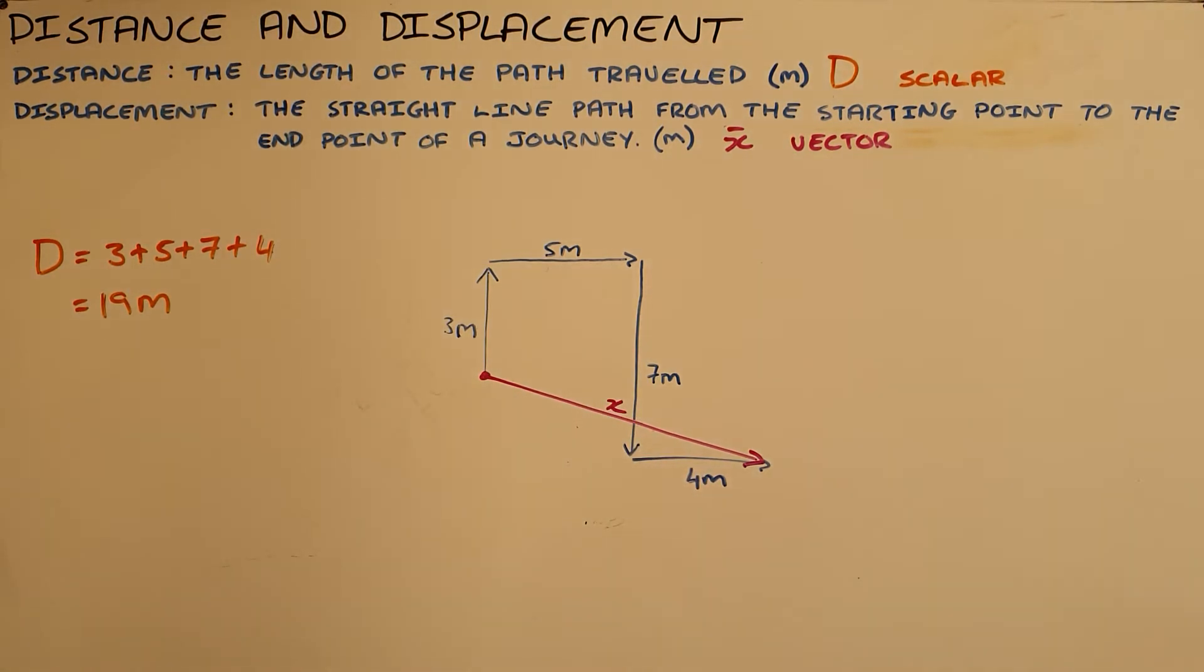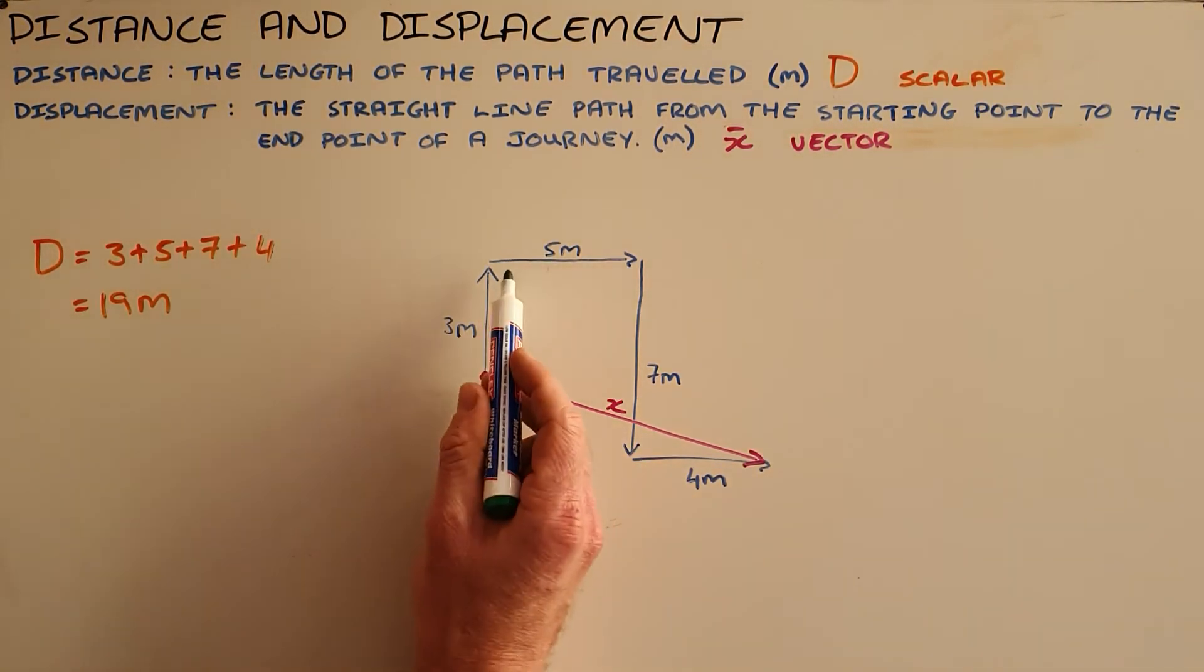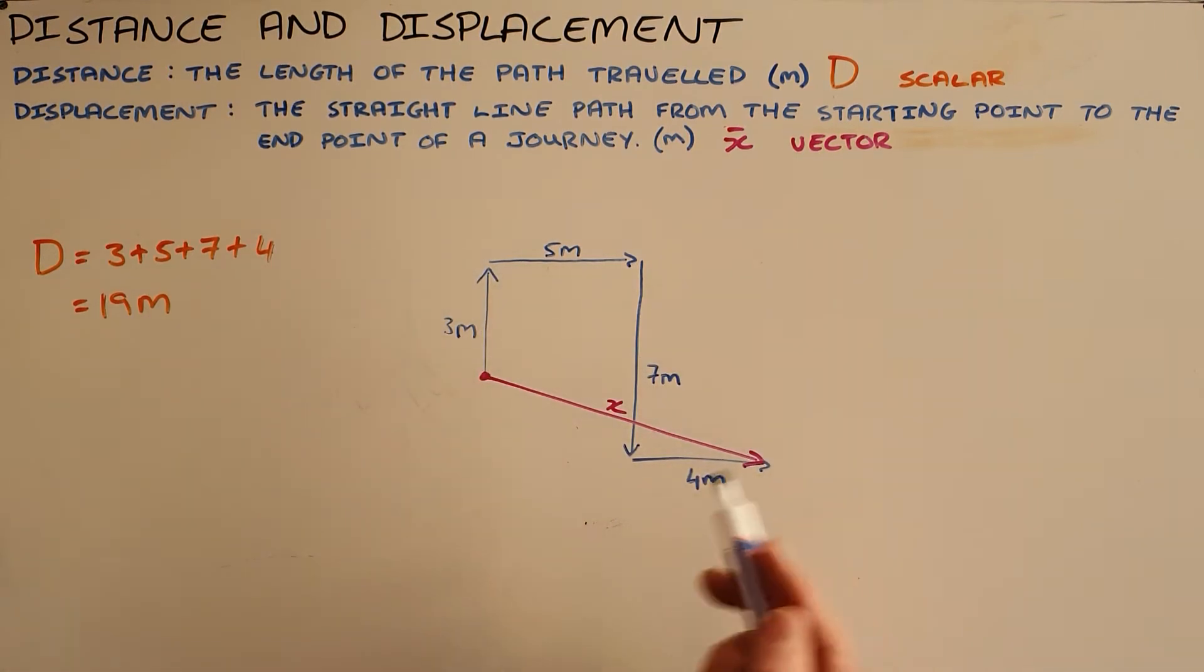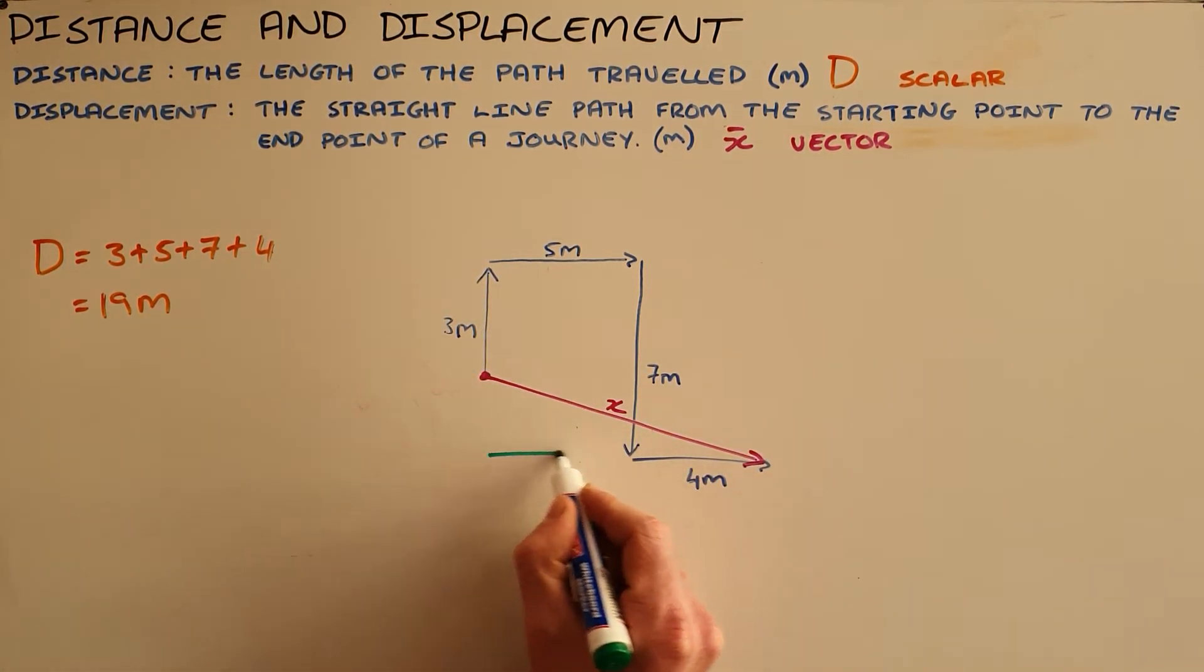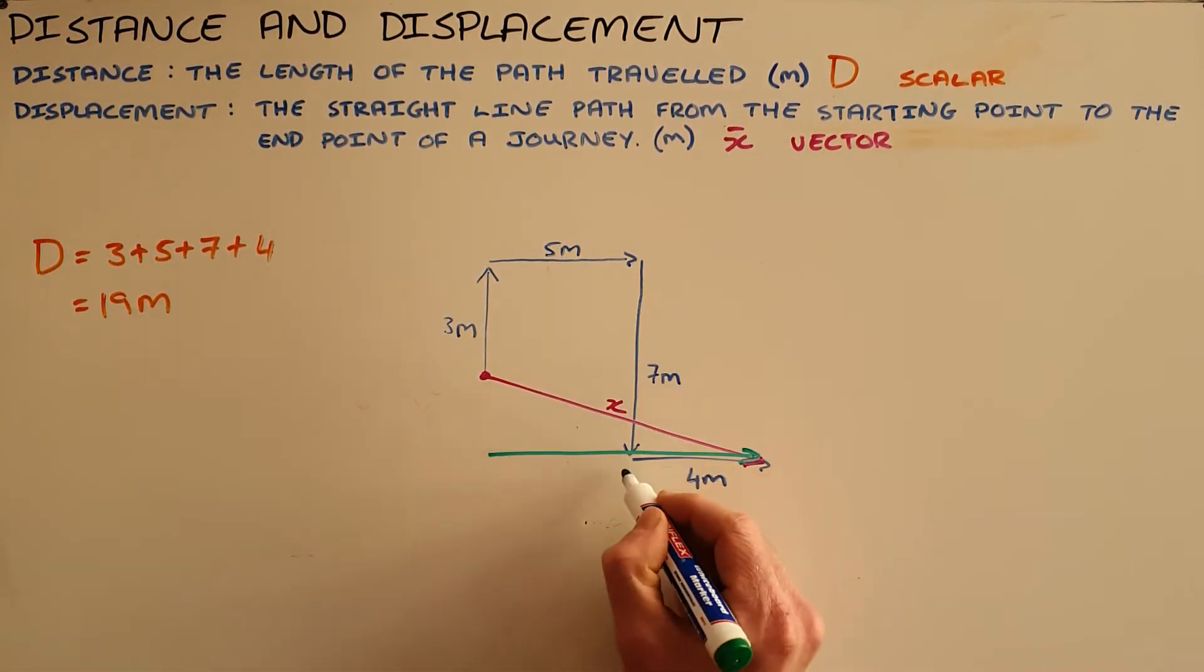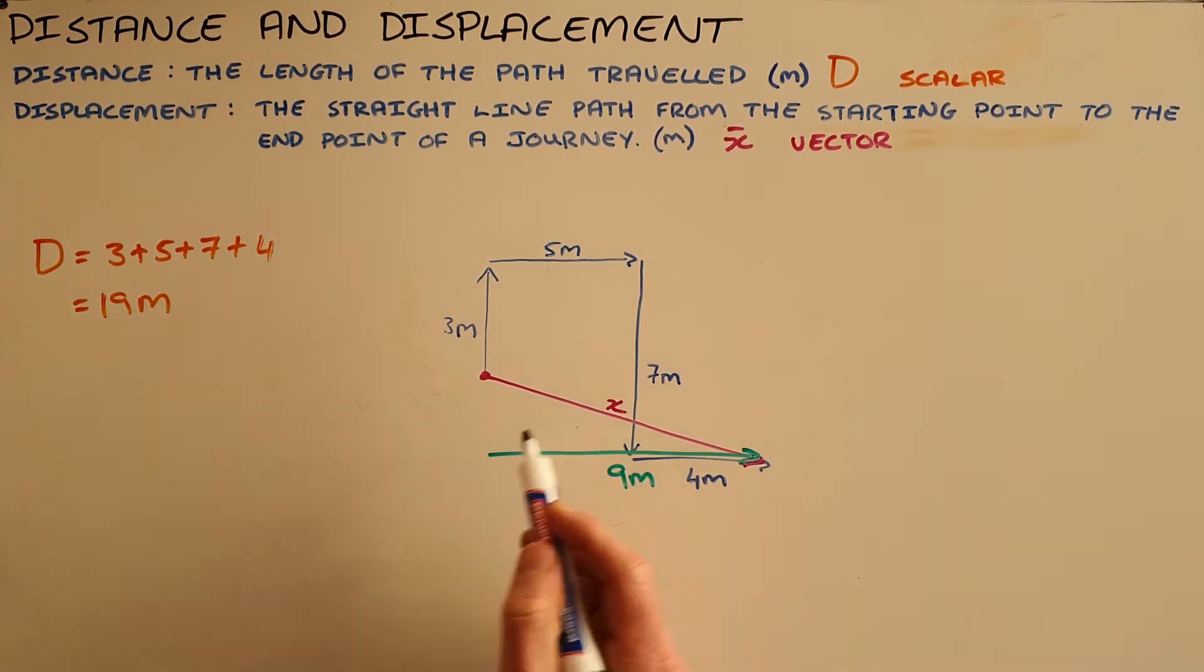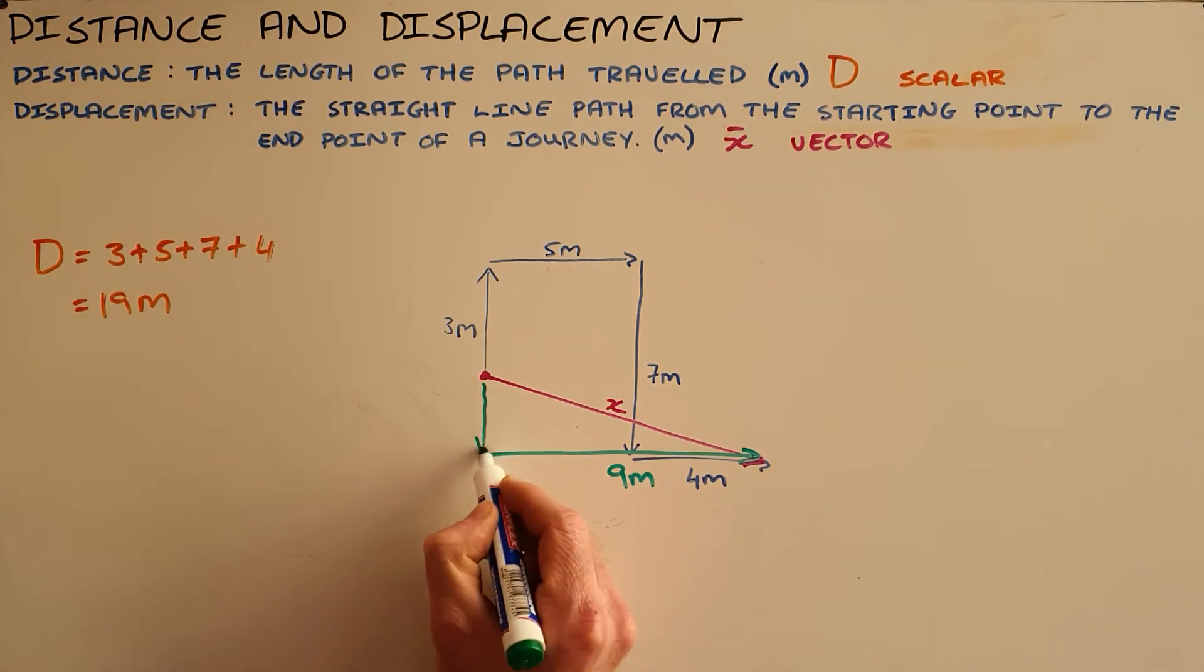We would often be required to use Pythagoras to find the exact value of that displacement. We can do that by seeing that the displacement to the right is a total of five plus four, which is nine meters, and the displacement in the vertical plane is three minus seven, which would be four meters downward.